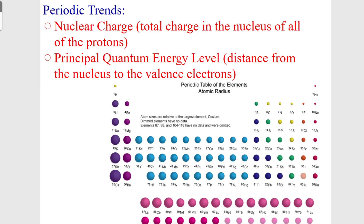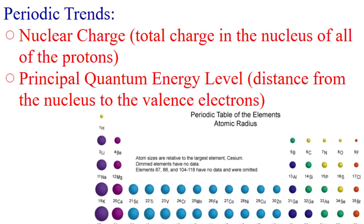When we get to periodic trends — whether we're talking about atomic radius or ionization energy — there are two ways we explain these trends. First is nuclear charge, which is the total positive charge in the nucleus due to all the protons. The second is the principal quantum energy level — N equals 2, N equals 3, N equals 4 — which represents the distance from the nucleus to the valence electrons. As the principal quantum energy level gets greater, the valence electrons get further from the nucleus. This is all about attraction and repulsion.